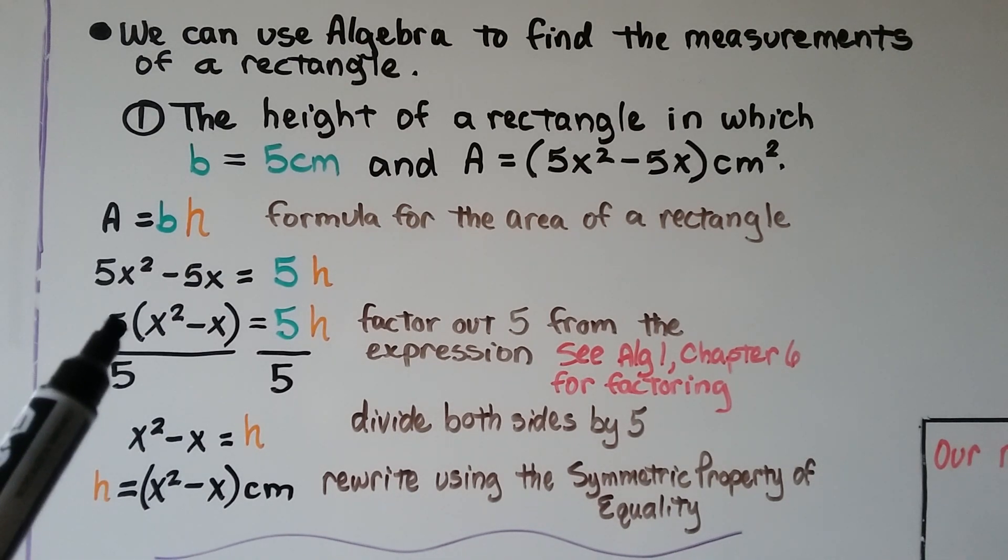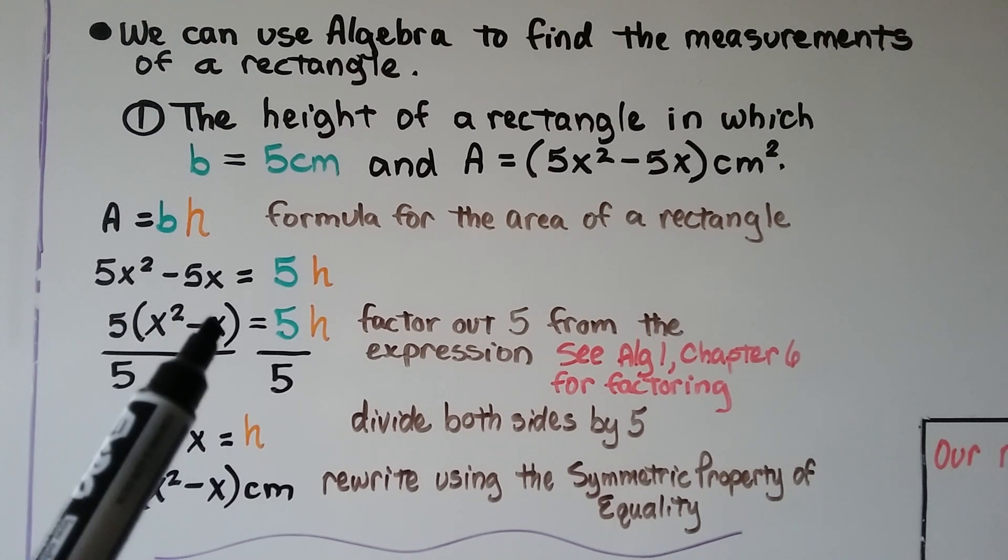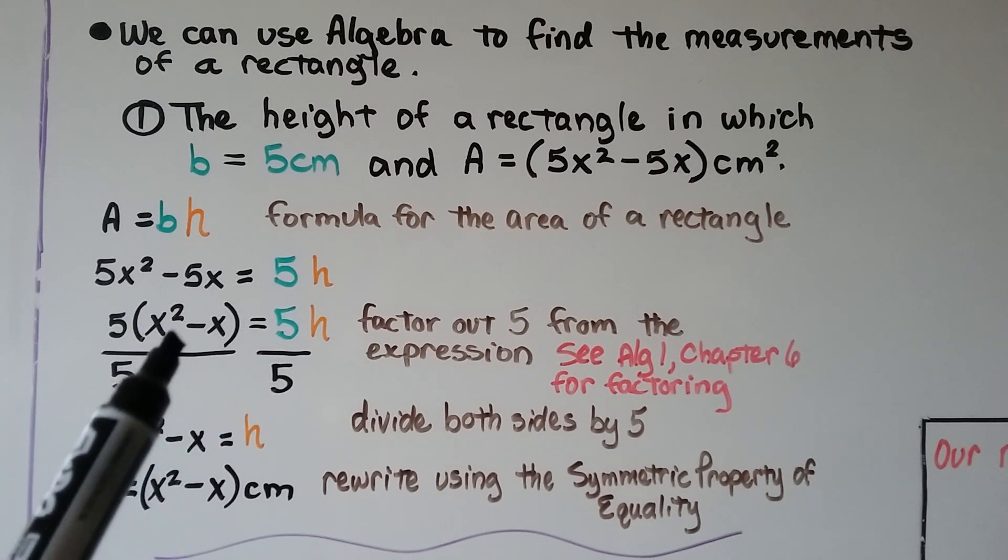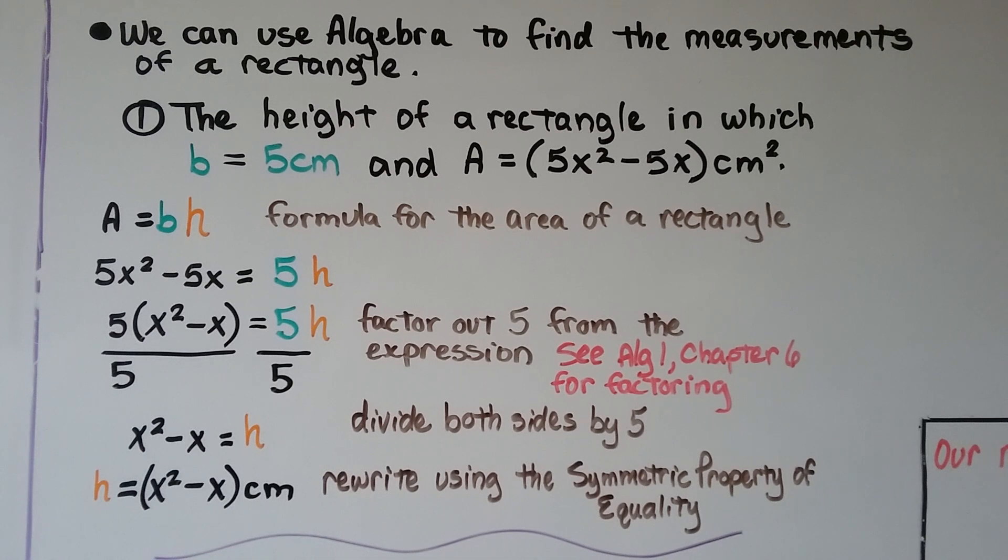Now we can factor out 5 from the expression. And we get 5 times x squared minus x equals 5h. If you don't remember factoring from last year from algebra 1, there's going to be a link in the description to the chapter 6 playlist. It's a short little chapter 6 playlist for factoring. It might be a good idea to go back and review it if you can't remember.